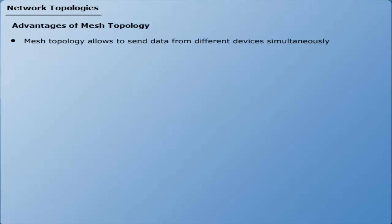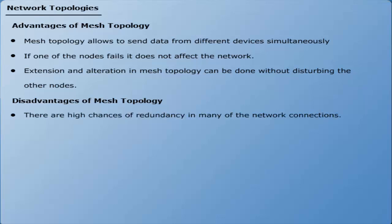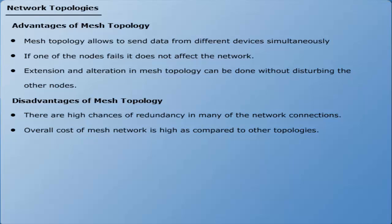Advantages of mesh topology: it allows data to be sent from different devices simultaneously, if one node fails it does not affect the network, and extension and alteration can be done without disturbing other nodes. Disadvantages of mesh topology: there are high chances of redundancy in network connections, the overall cost is high compared to other topologies, and setup and maintenance of this topology is very difficult.